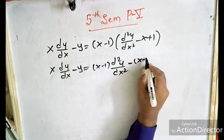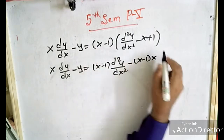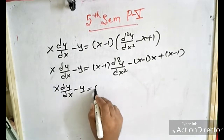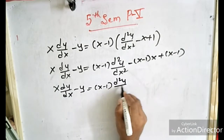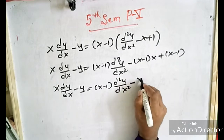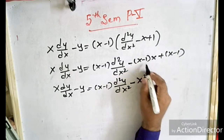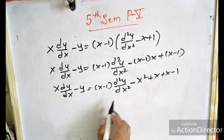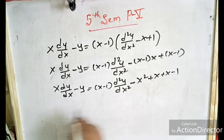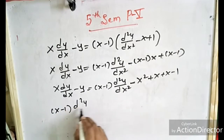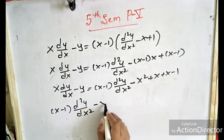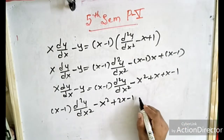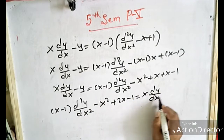Multiplying out: (x minus 1) into d²y/dx² minus (x minus 1) into (x plus 1). So now we have x·dy/dx minus y equal to (x minus 1)·d²y/dx² minus x² plus x, giving us d²y/dx² with a 2x term.